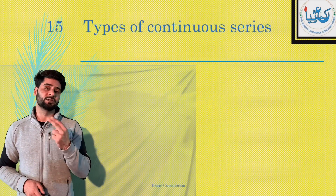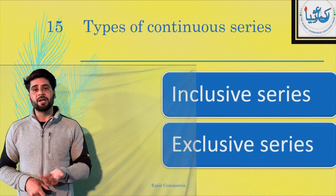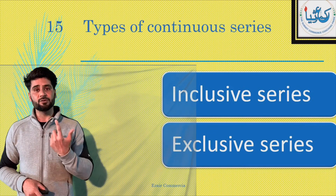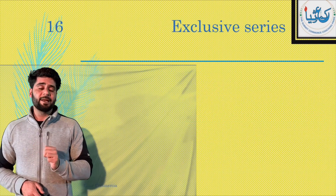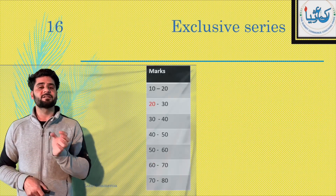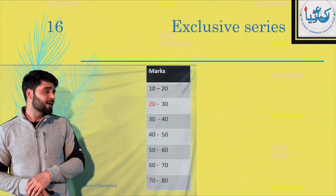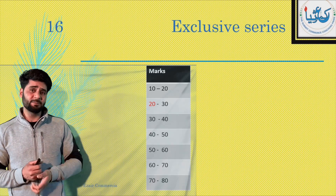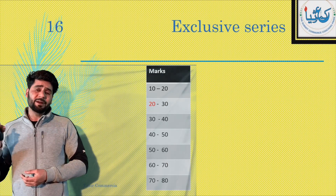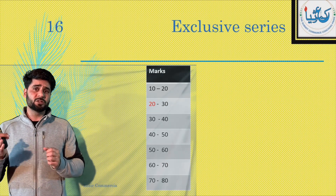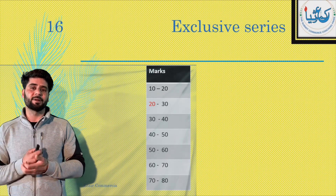Now this continuous series is of two types — ek to hai inclusive series, aur doosri hai exclusive series. Sab se pehle hum padhenge exclusive series. Exclusive series is just like: 10 to 20, 20 to 30, 30 to 40, 40 to 50, 50 to 60, 60 to 70, 70 to 80. Agar aap yahan dekhenge, jo 10 to 20 hai, uske baad 20 to 30 — upper limit ek interval ki doosre ki lower limit hai. Jaise ki 10 to 20, 20 to 30 — uski upper limit iske lower limit ke barabar hai.